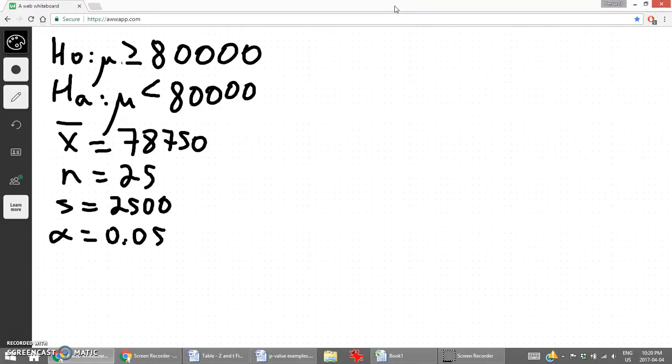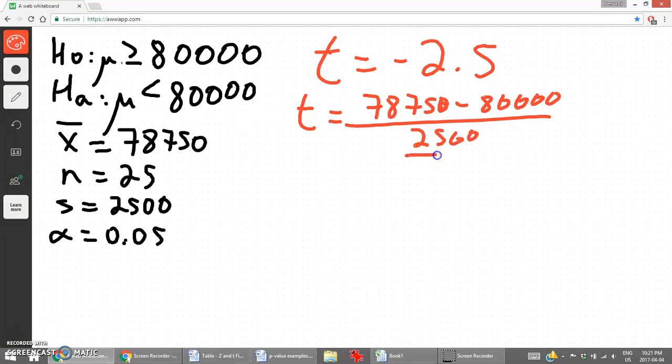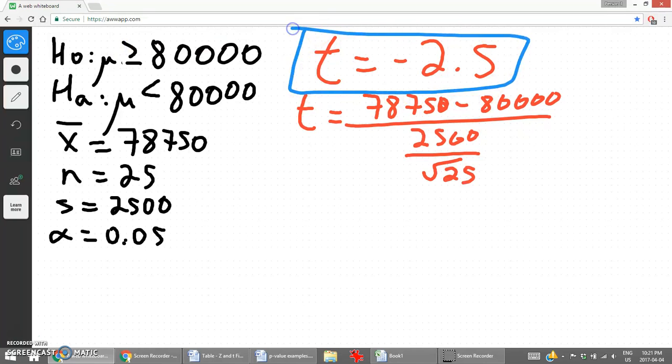We know from the previous video that our test statistic is negative 2.5. Just as a recap, this value is going to equal seventy-eight thousand seven fifty minus eighty thousand divided by the standard deviation over the square root of the sample size, and that gives us this value. Our test statistic.